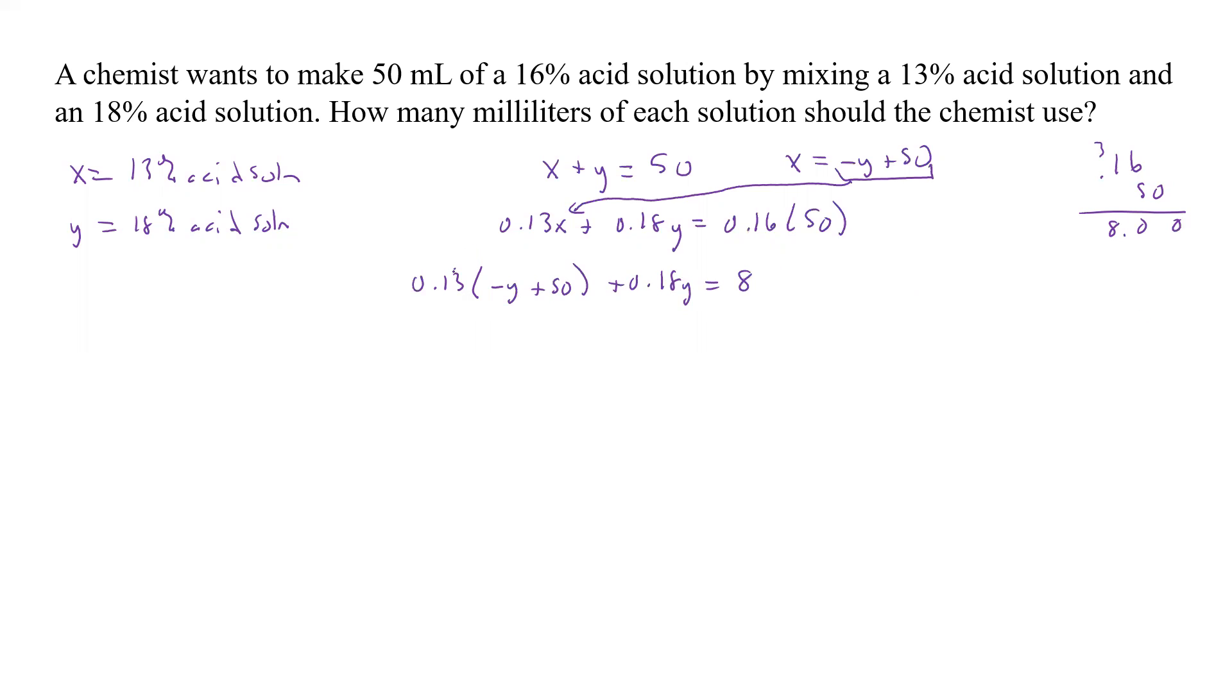And here now we have to distribute here. And so now we're going to take 0.13 times 50 as well. And so now we have 0, that's 15. That's going to be 6, moved over to 6.5. So we have a negative 0.13Y plus 6.5 plus 0.18Y equals 8.